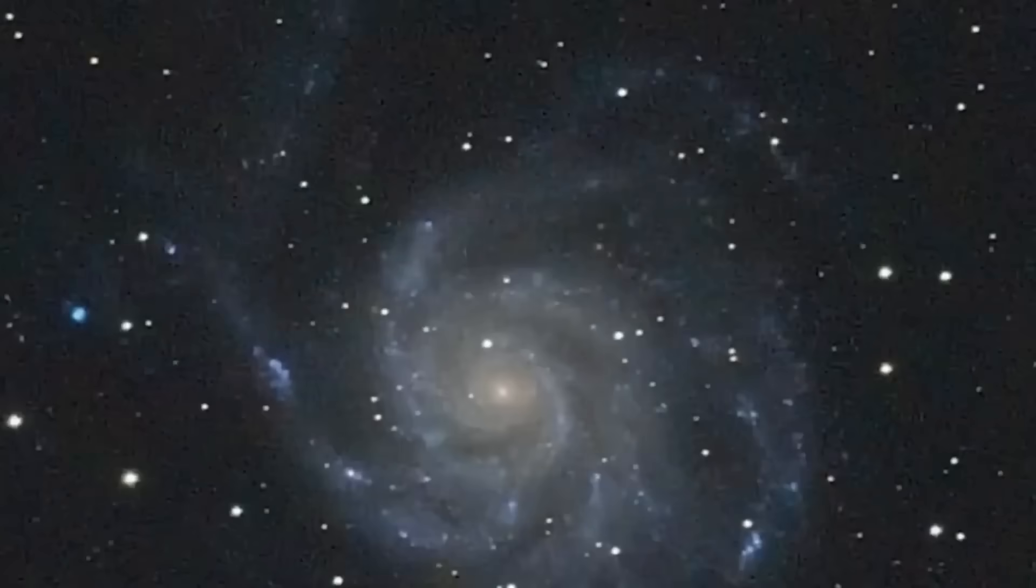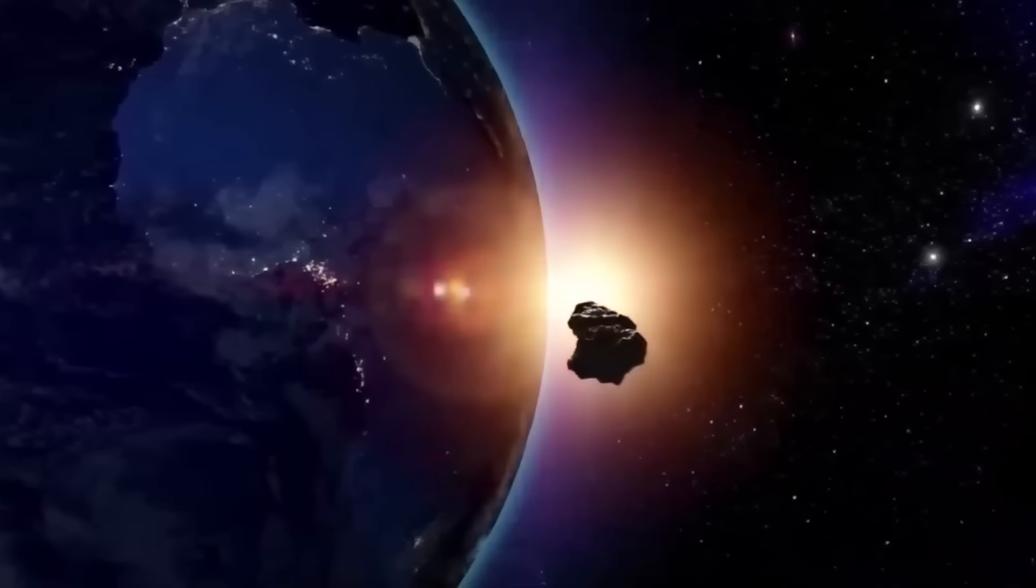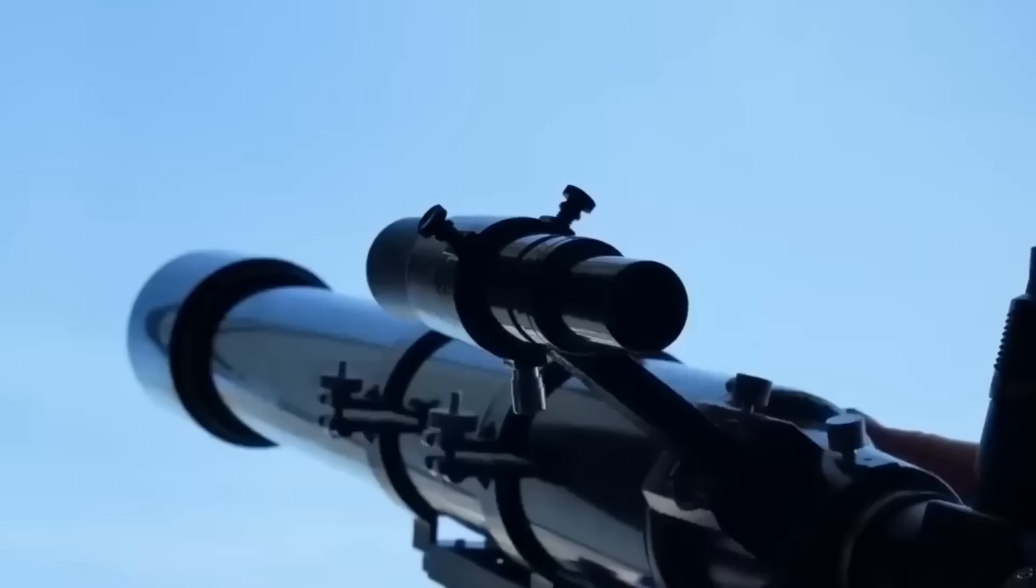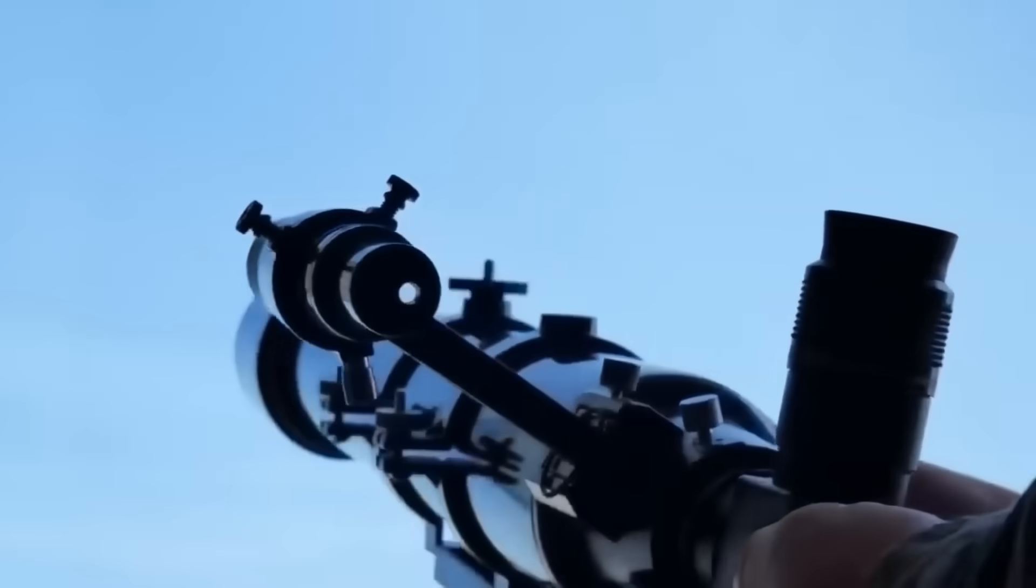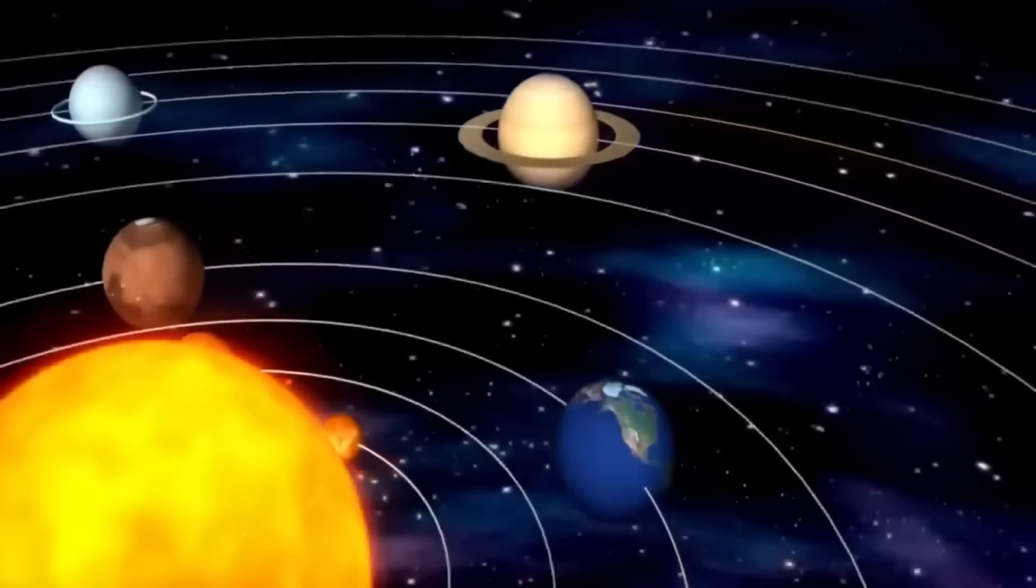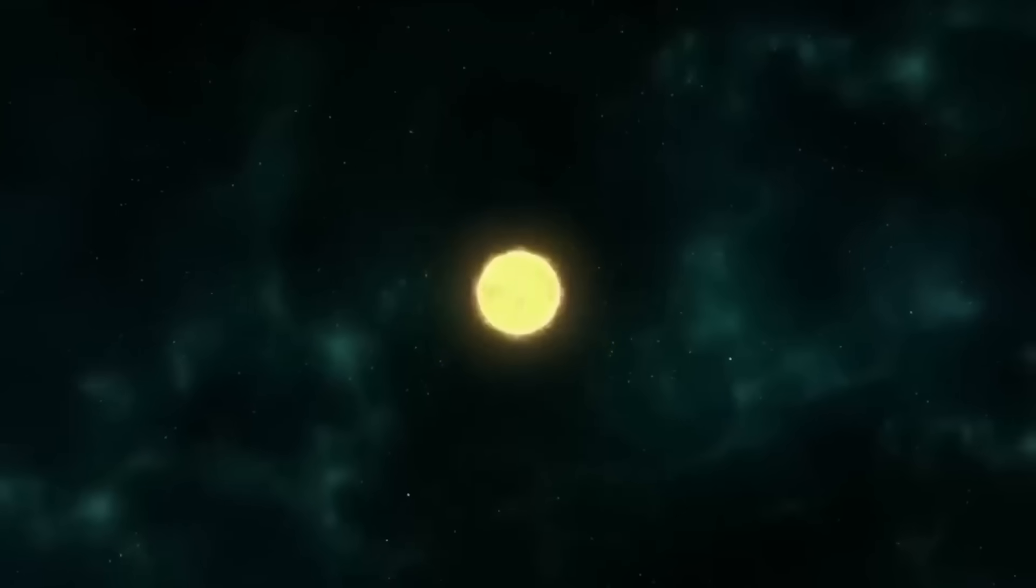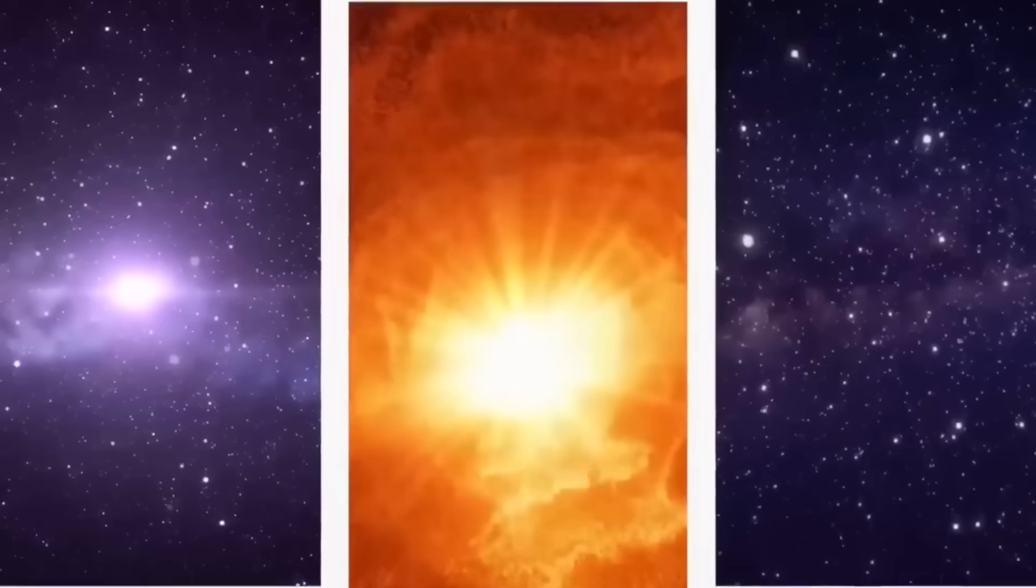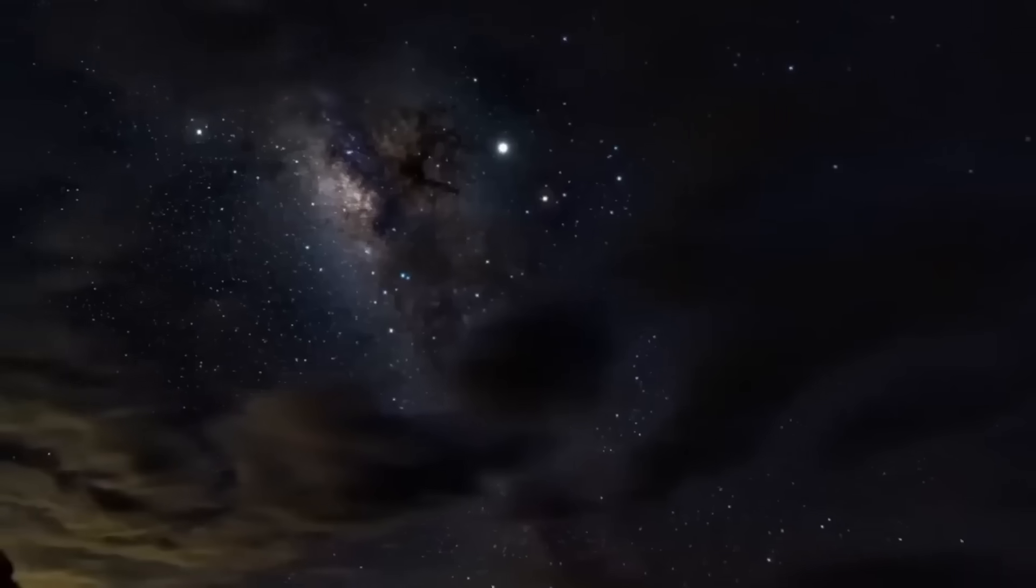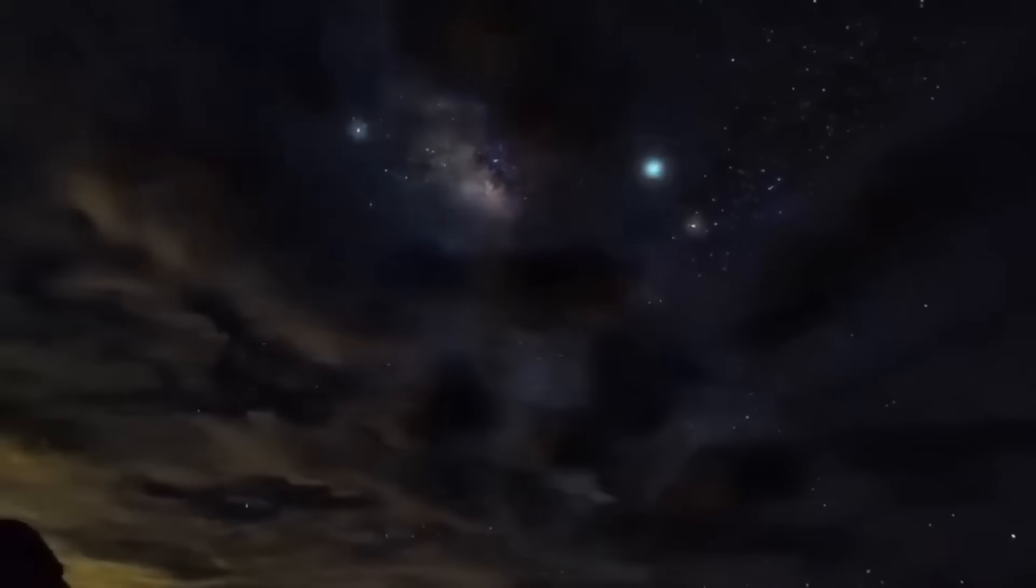As it burns through its nuclear fuel, Betelgeuse is gradually losing mass and undergoing immense changes within its core. One of its defining features is its distinctive red hue. Unlike stars like our sun, which shine with a bright yellow light, Betelgeuse's surface temperature is relatively cool, around 3,500 Kelvin, compared to the sun's 5,500 Kelvin. This cooler temperature results in the star's red appearance, providing astronomers with important clues about its internal processes and state of evolution.